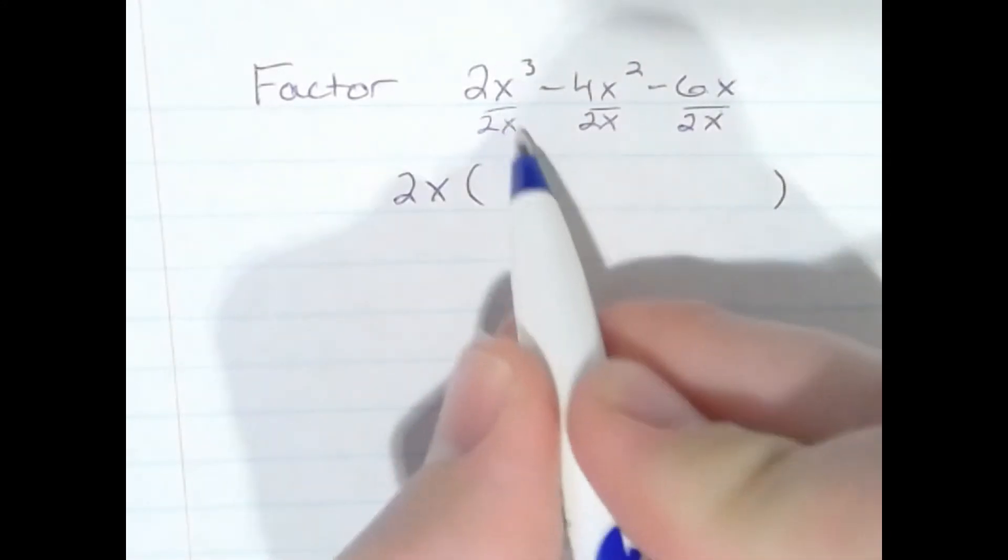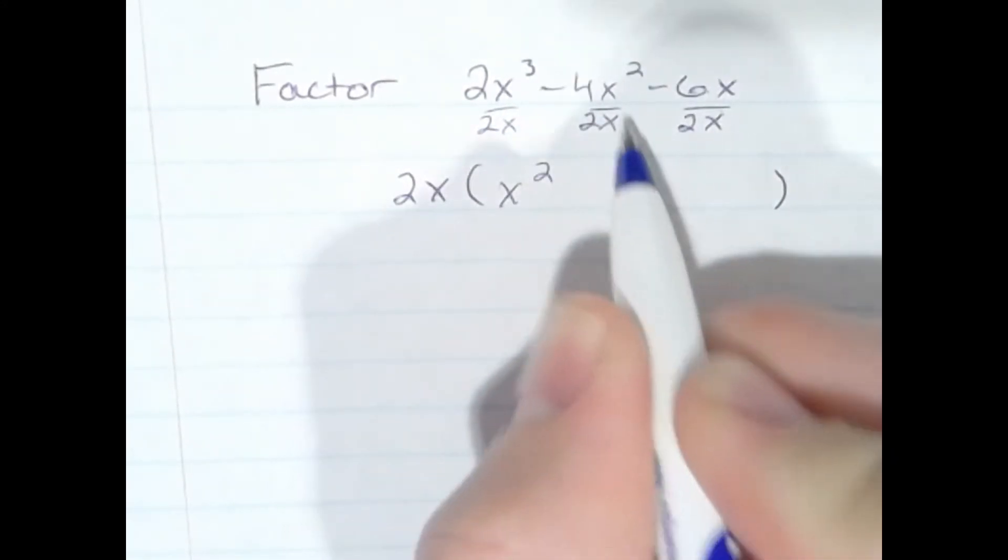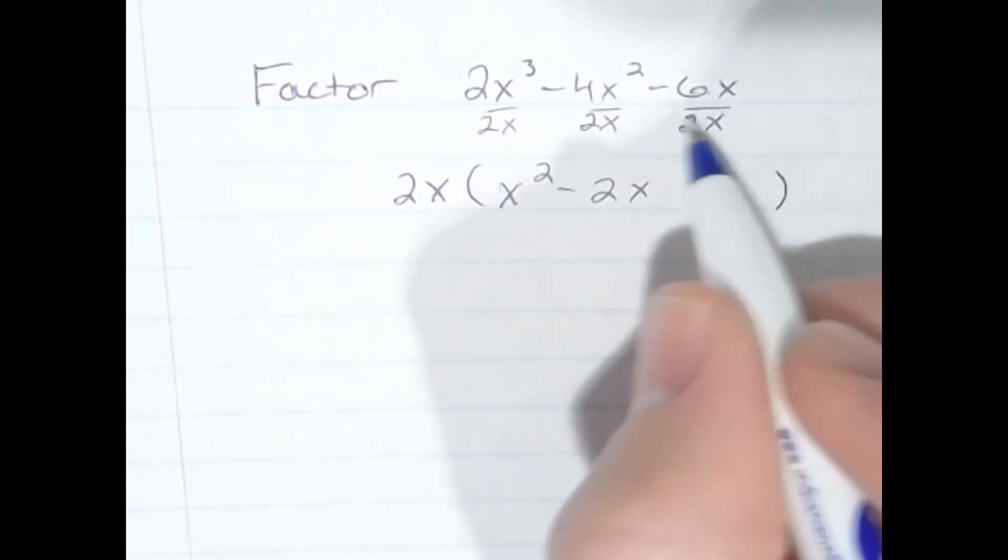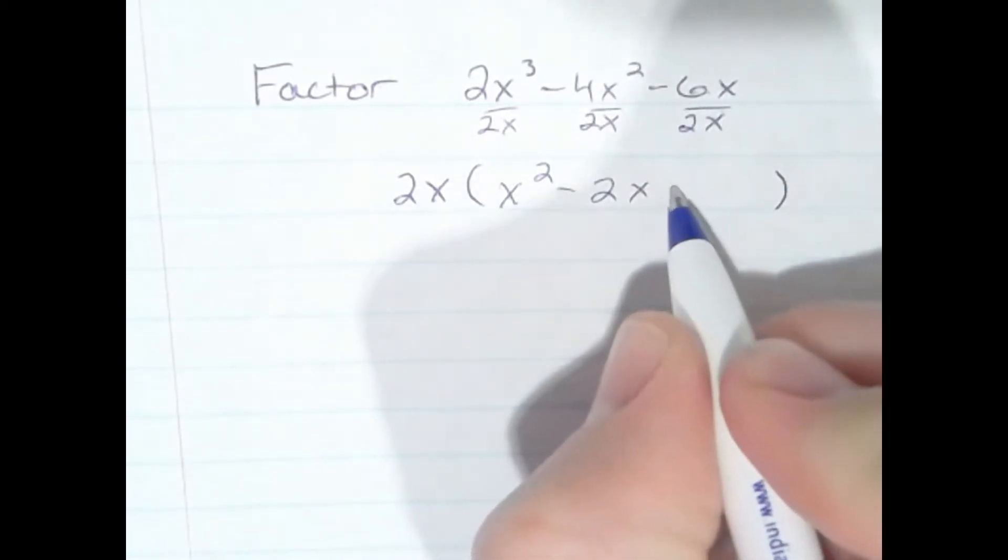What's left here is x to the second. What's left here is 2x and negative 6x divided by 2x, negative 3.